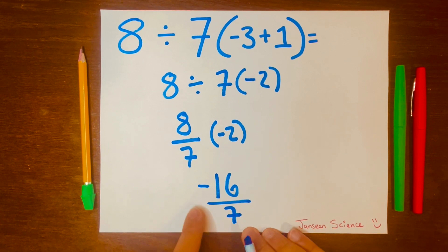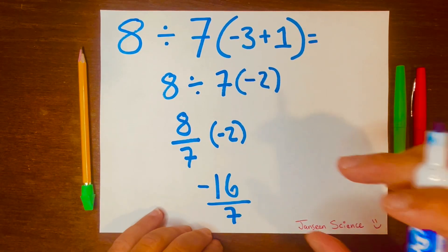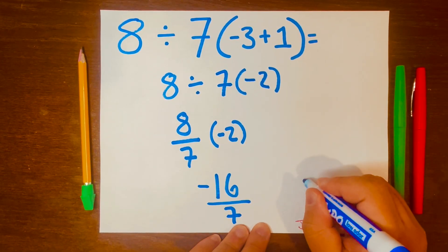So your answer is negative 16 over 7, and that is an improper fraction. We can turn this into a mixed number—that's when you have a whole number and a proper fraction—and we'll use long division.